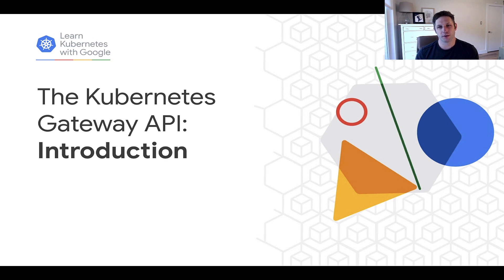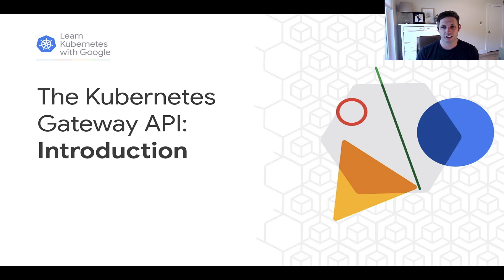Service networking is the portion of Kubernetes that involves exposing or publishing your pods on a network so they can be accessed by other clients. There are very simple ways of doing this within the cluster and then more complex ways that expose your Kubernetes apps to clients running outside the cluster or even on the public internet.